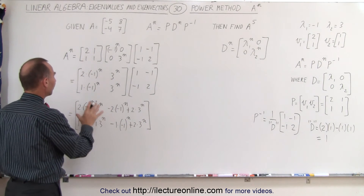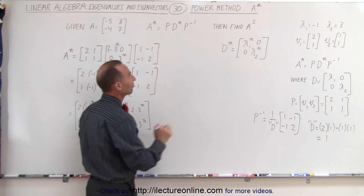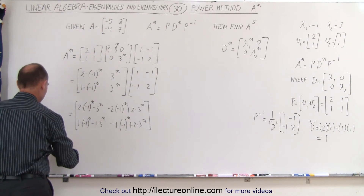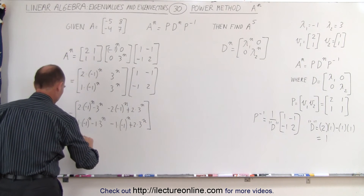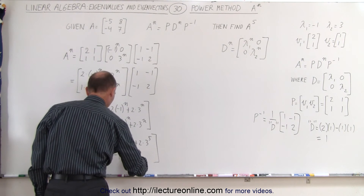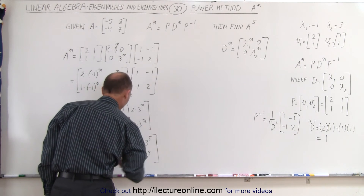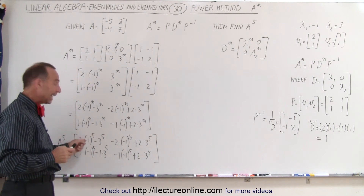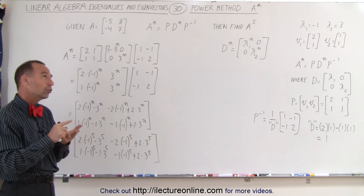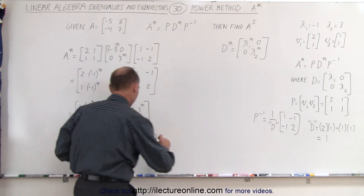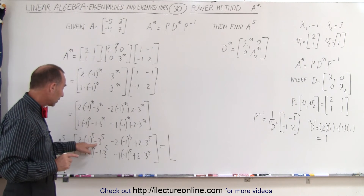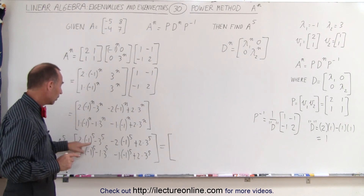That's the generalized result of A to the nth power. Now, if we're trying to find A to the 5th power, we simply replace all the nth by 5. So A to the 5th is equal to: upper left is 2 times negative 1 to the 5th minus 3 to the 5th. Negative 1 to the 5th is negative 1, and 3 to the 5th is 243. So that gives us 2 times negative 1 minus 243, which is negative 2 minus 243 equals negative 245.